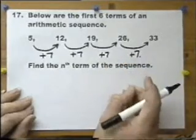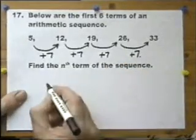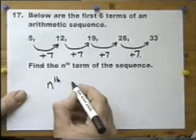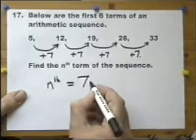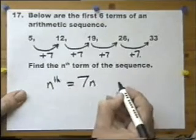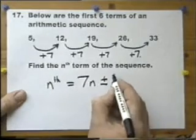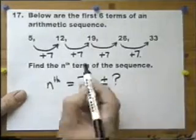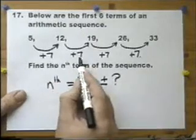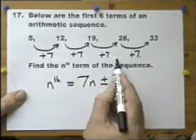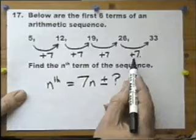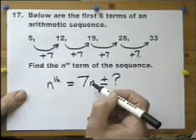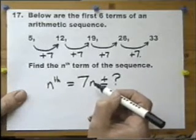Now that's a clue to the nth term. The nth term is 7n plus or minus a number. So working out this, what we call the first difference, working out this difference, gives us the first part of the formula for the nth term.